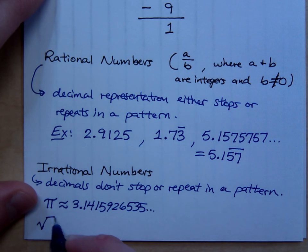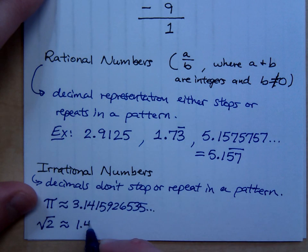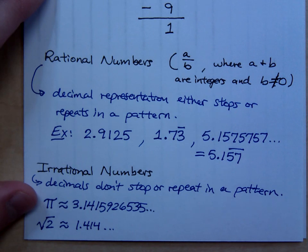Some things like the square root of 2. The square root of 2 is approximately 1.414, but the decimal representation is really weird after that. It doesn't have a pattern. There's no pattern at all.